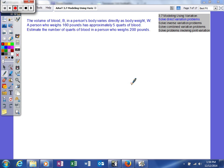Alright, so here's our first example. It says the volume of blood B in a person's body varies directly as the body weight W. A person who weighs 160 pounds has approximately 5 quarts of blood. Estimate the number of quarts of blood in a person who weighs 200 pounds.